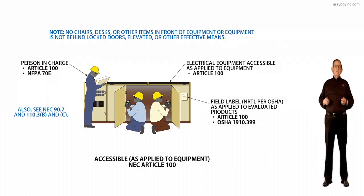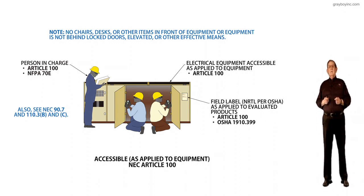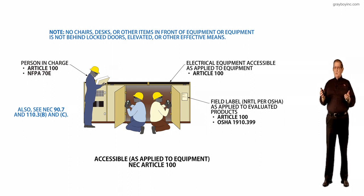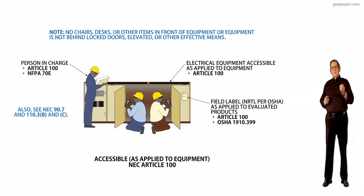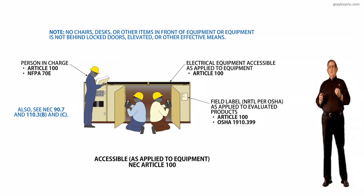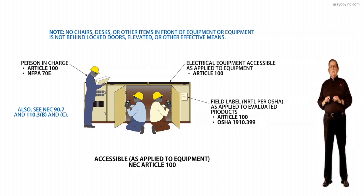This illustration deals with accessible as applied to equipment, NEC Article 100. This definition was necessary so that electricians would not get confused with readily accessible. We had a definition for readily accessible in Article 100, but we did not have one for accessibility as applied to equipment, so we hope that this new definition will straighten out that problem.